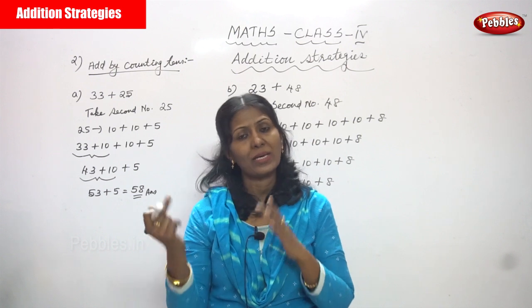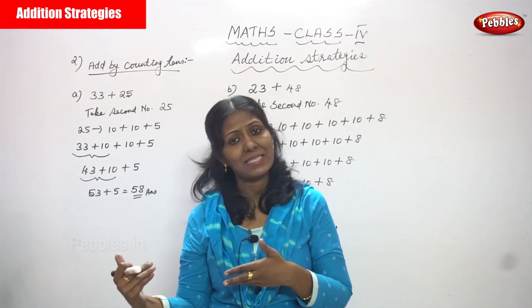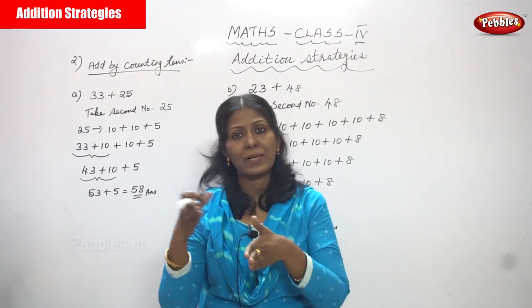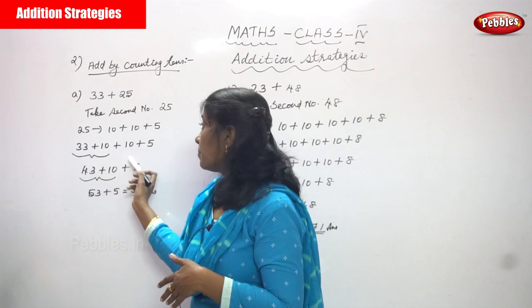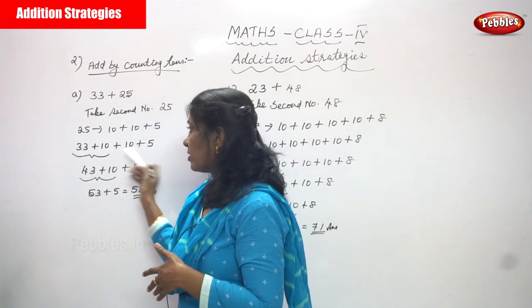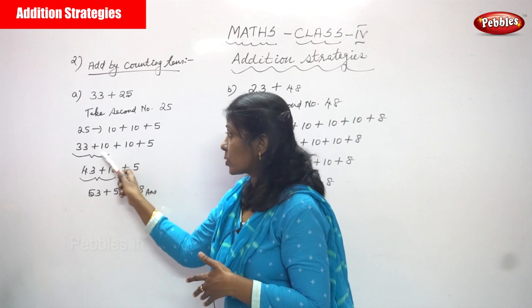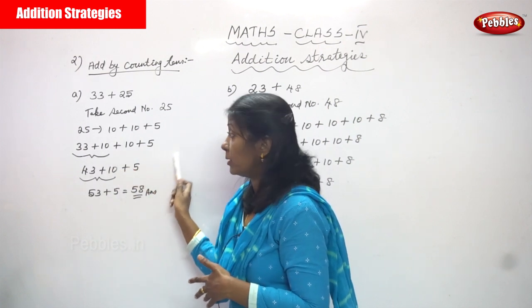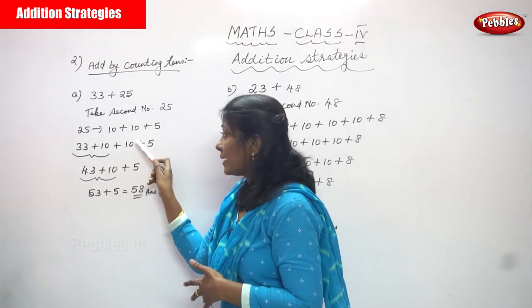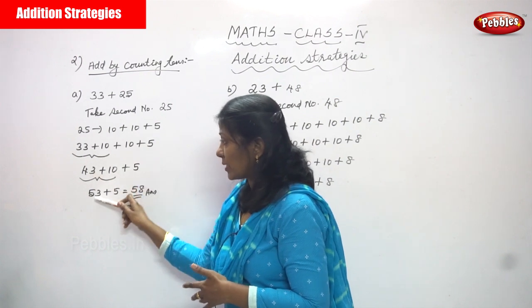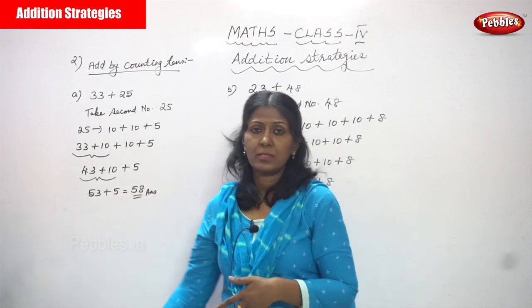I write 33 plus 10 plus 10 plus 5. First, 33 plus 10 gives 43. Then 43 plus the second 10 gives 53. Then 53 plus 5 gives 58. That is the answer.